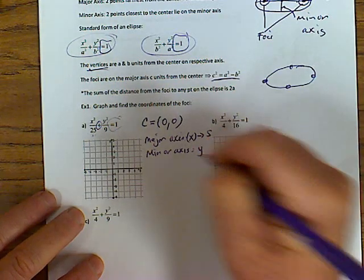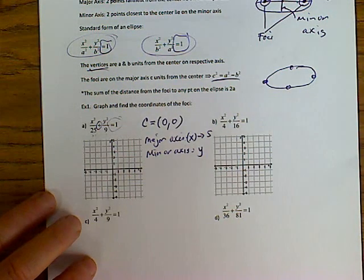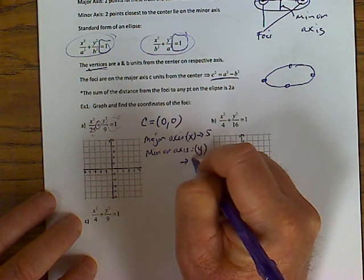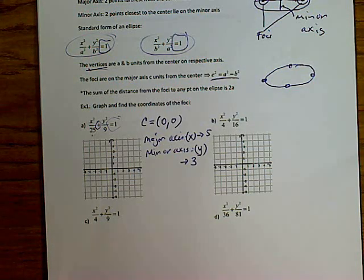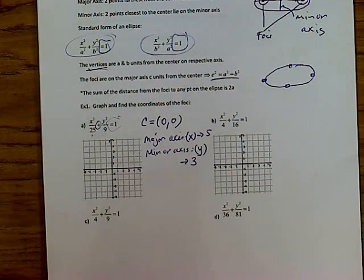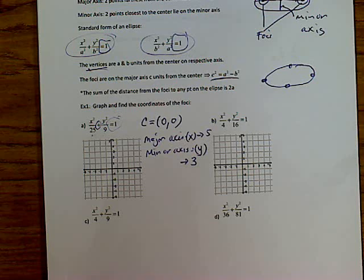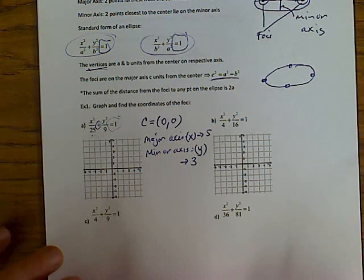The minor axis is y because it has the smaller number underneath. How far would you go in the y direction? You're going to go three units — the square root of the bottom. If the number is not nice you'll have to get decimals; we'll deal with that when necessary.